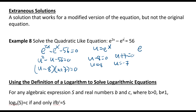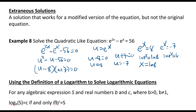Since u equals e^x: if e^x equals 8, then taking the natural log gives x equals ln8. If e^x equals negative 7, we'd need the natural log of a negative number, which is undefined — so that case has no solution.